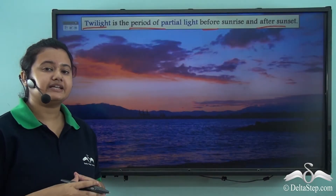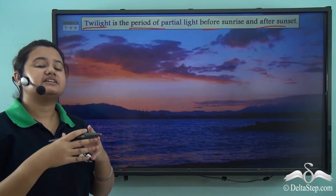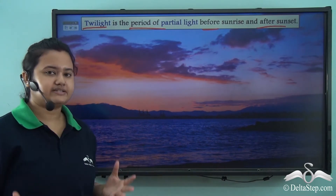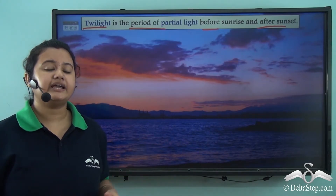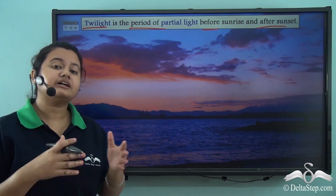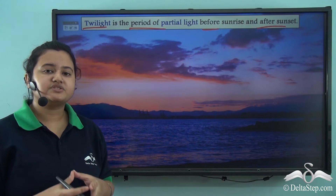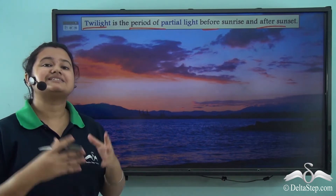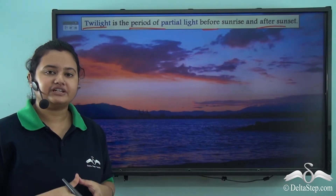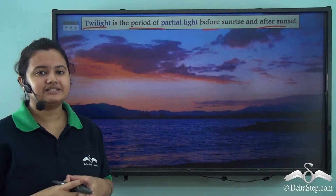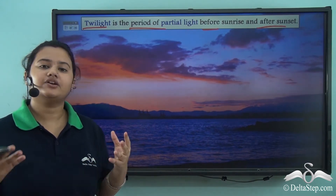Twilight indicates a gradual transition in the sky as there is a change from day to night and vice versa. As we have just seen in the video, in case of twilight, the sky is neither completely dark nor is it brightly lit up. Rather, we can observe that the sky is lit up by a very soft and warm light. This time of the day when the sky is dimly lit is known as twilight. Now let's see how and when twilight occurs.